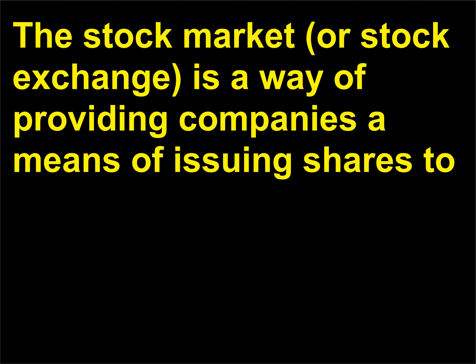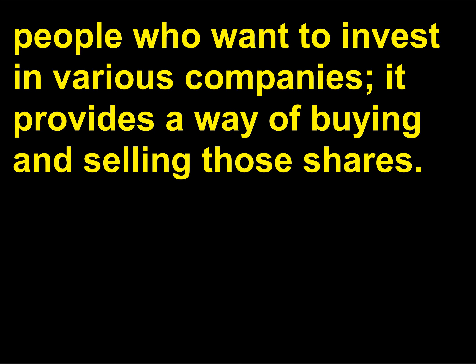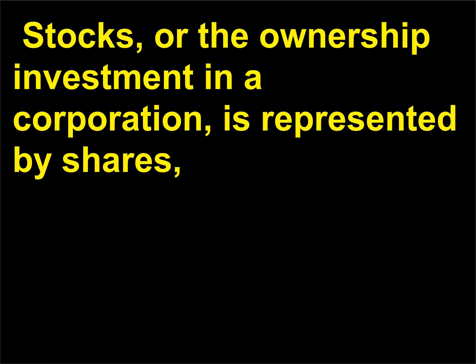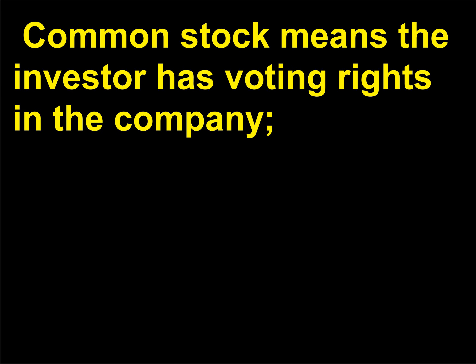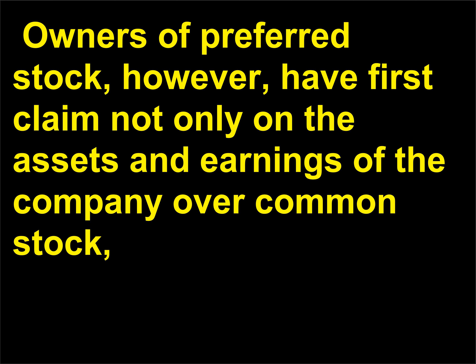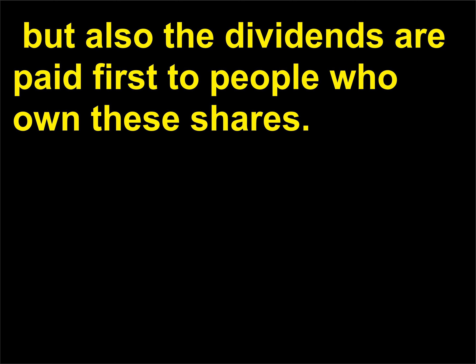The stock market, or stock exchange, is a way of providing companies a means of issuing shares to people who want to invest in various companies; it provides a way of buying and selling those shares. Stocks, or the ownership investment in a corporation, is represented by shares, which are claims on a company's assets and earnings. Common stock means the investor has voting rights in the company. Preferred stock means there are no voting privileges; however, owners of preferred stock have first claim on the assets and earnings of the company over common stock, and dividends are paid first to people who own these shares.